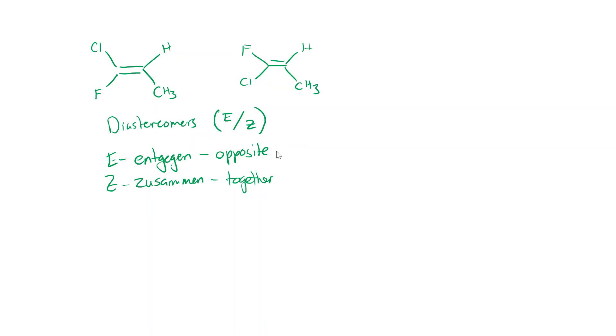And the Z stands for Zusammen, which means together. Take that C in freshman German class. Anyway, so now I know. So totally worth it. Okay, opposite together. And what we're comparing is we're going to look at the, we're going to assign priority numbers for each carbon and then compare the position of the highest priority groups. So let's do the first one. We're going to look at this carbon over here. This carbon has a chlorine and a fluorine attached to it. The chlorine has the higher atomic number. So that one gets the higher priority, one and two.